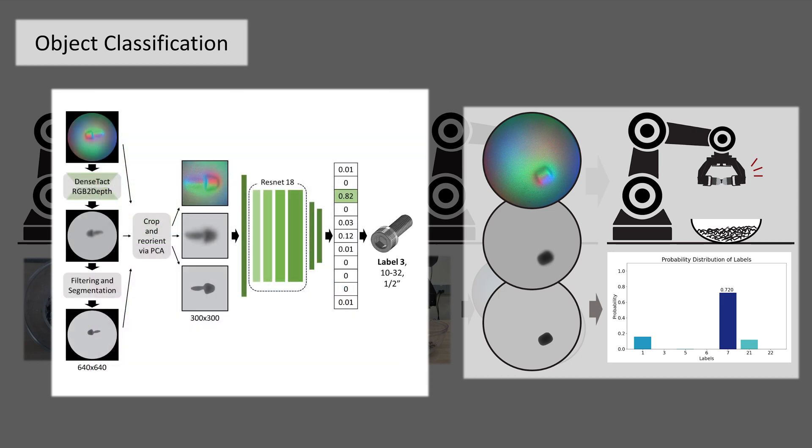We crop and reorient RGB, depth, and labeled depth images using PCA to get better classification results through the network model even with limited size of the dataset.